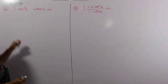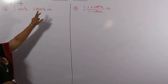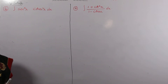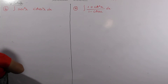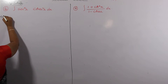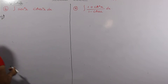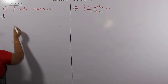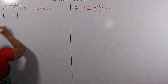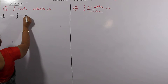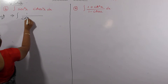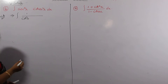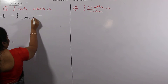Next we have the integral of secant squared x times cosecant squared x dx. The solution begins by rewriting: secant squared x can be written as 1 over cos squared x, and cosecant squared x can be written as 1 over sin squared x.